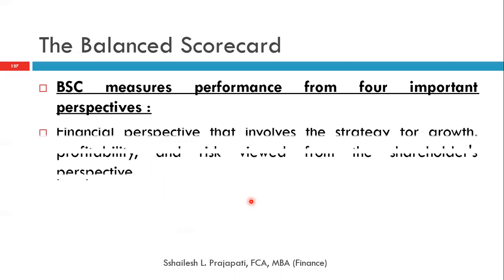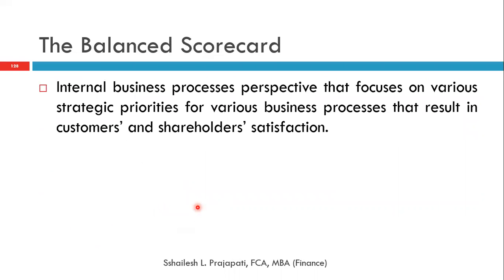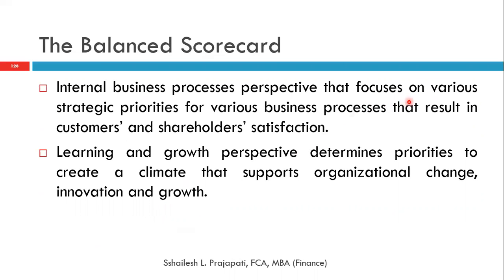The Balanced Scorecard measures performance from four important perspectives. First is the financial perspective, which involves the strategy for growth, profitability, and risk viewed from the shareholders' point of view. Second is the customer perspective, which concentrates on creating value and differentiation from competitors. Third is internal business processes, which focuses on various strategic priorities for various businesses that result in customer and shareholder satisfaction — once you are clear on internal business processes, it automatically gives effectiveness in external environments. Fourth is the learning and growth perspective, which determines priority to create a climate that supports organizational change, innovation, and growth. This is very important: unless you have a learning organization, growth will be limited.